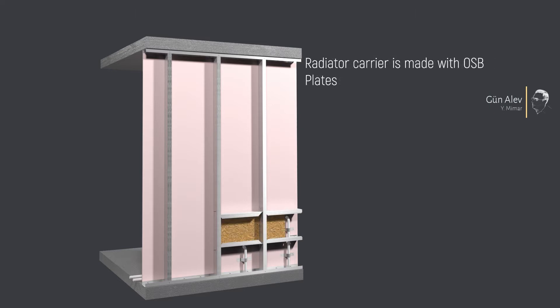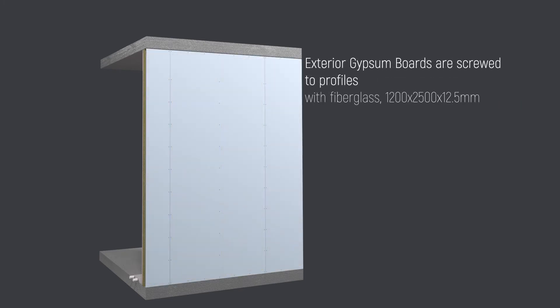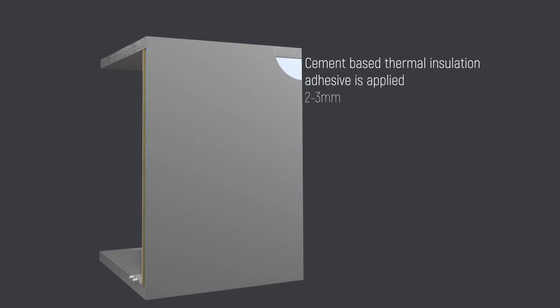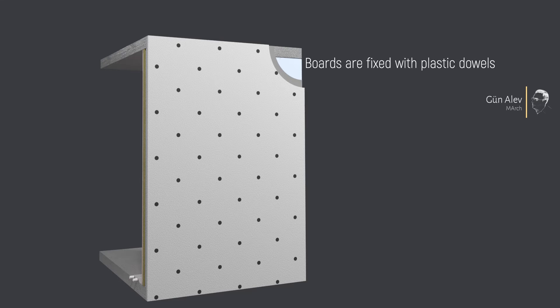Radiator carrier is made with OSB. Rock wall panels are used for thermal and sound insulation. Exterior gypsum boards are screwed and thermal insulation adhesive is applied.